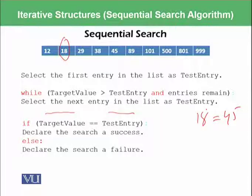Then we will be checking if 18 is equal to 45 or not. And if that is found we will say that we have a success. Else we will declare the search was a failure.